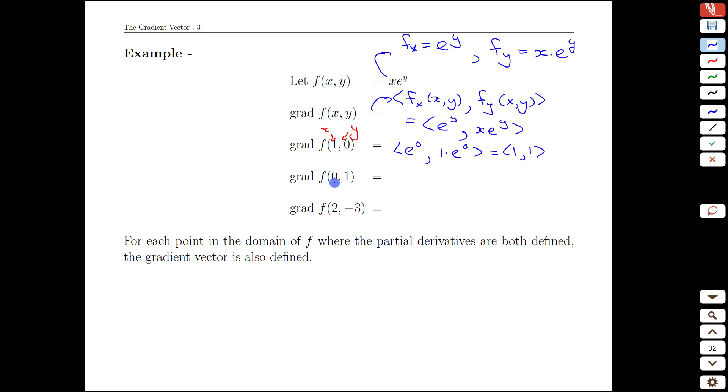Let's reverse that. We will have x equals 0, y equals 1, well e to the 1 would be e and 0 times e to the 1 would be 0, so we would have e, 0.